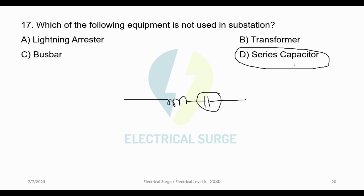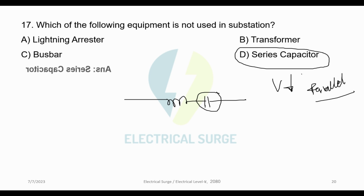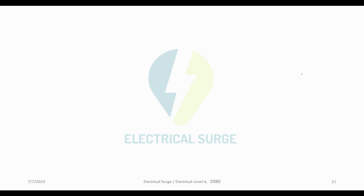A parallel capacitor is used to improve power factor and reactive load compensation. The series capacitor is used in the transmission line. Therefore, the answer is Option D: Series Capacitor. Next question.